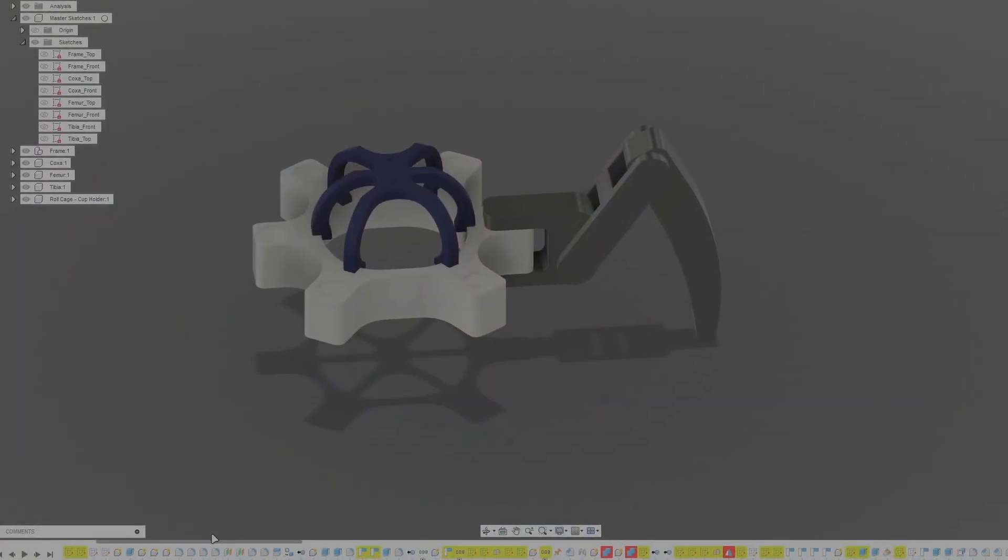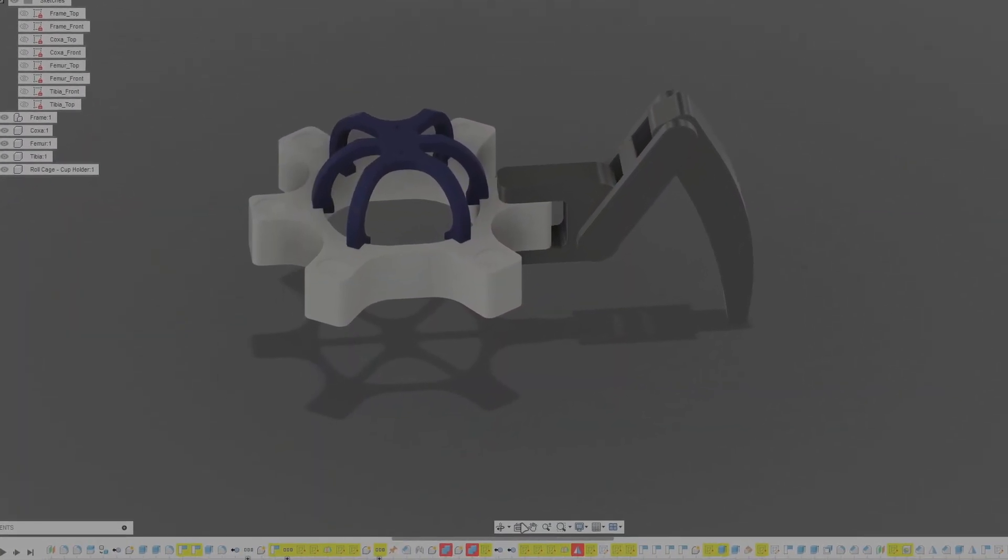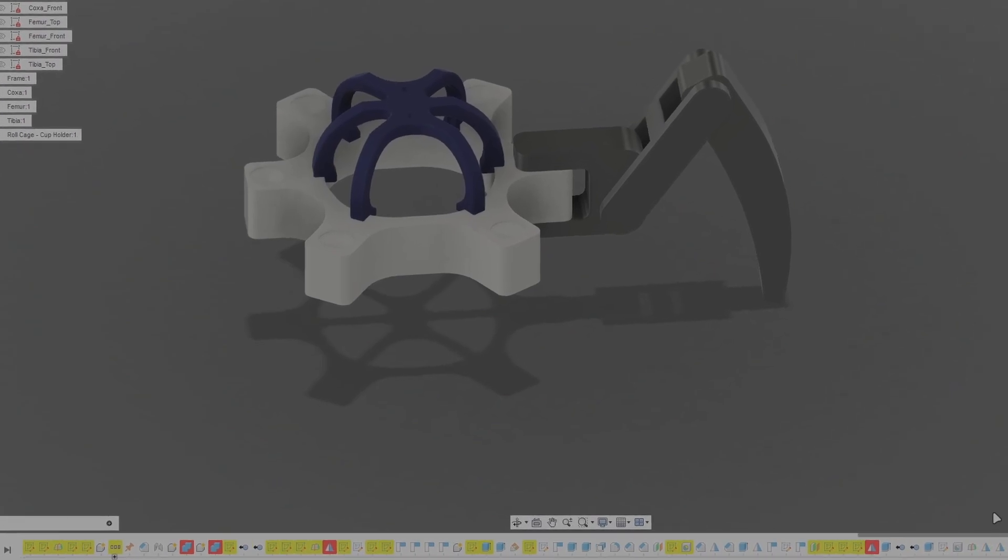In hindsight, I should have just started from scratch, using the big hexapod CAD files as a reference. It was very annoying to delete things that weren't needed since everything referenced each other, but hindsight is 20-20. Remaking this from scratch would make for some great CAD practice. If you do, feel free to send me the files. With that said, the CAD files and STLs that I made are linked in the description.